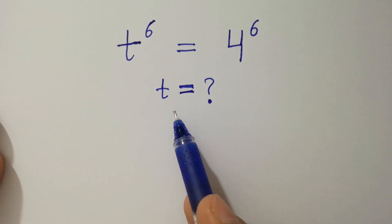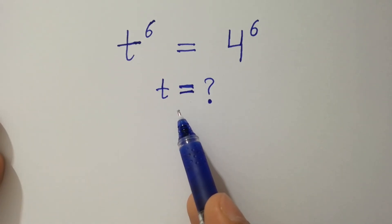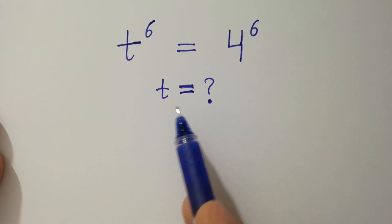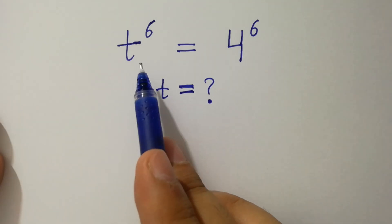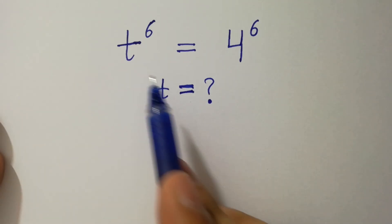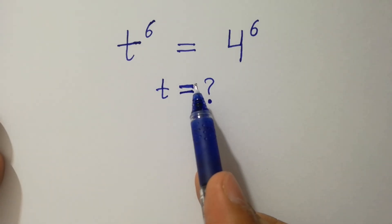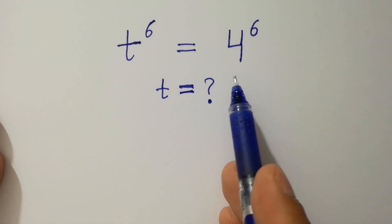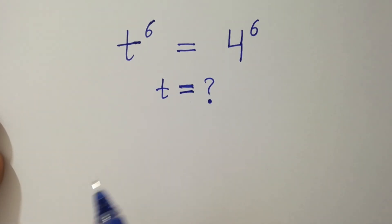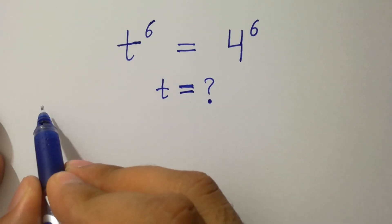Hello friends, find the value of t if t to the power 6 equals 4 to the power 6. Let's have a solution.